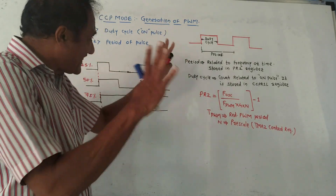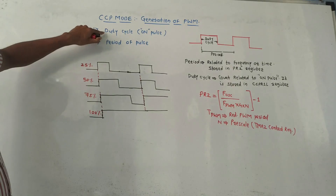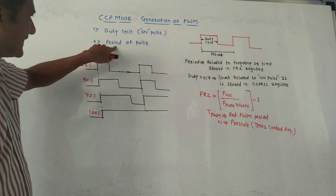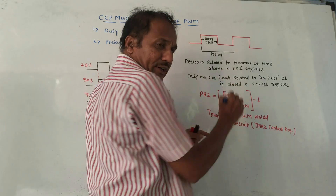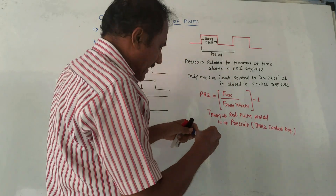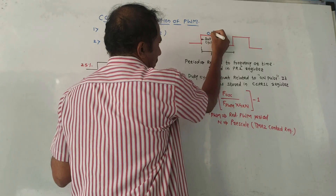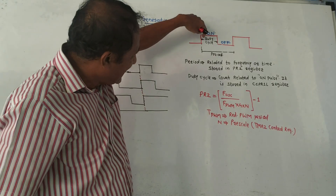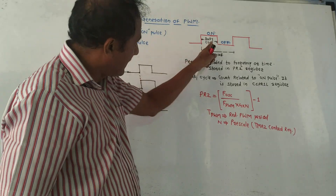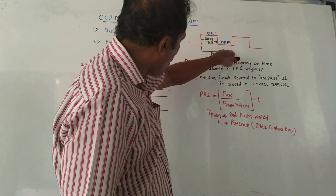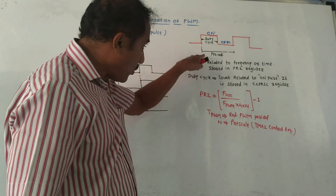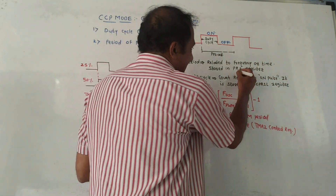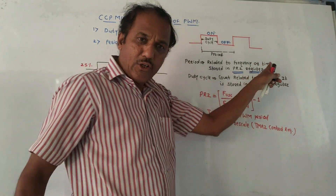There are two parts in PWM — pulse width modulation. First is duty cycle, which is also called on-pulse, and second is the period of the pulse. Looking at the basic diagram, a signal is a square wave. The on-pulse duration is called duty cycle, whereas the combined value of on and off pulse is called the period of the signal. This period is related to frequency or time, and this value is stored in the PR2 register.